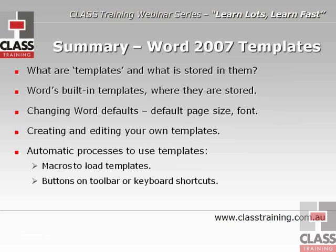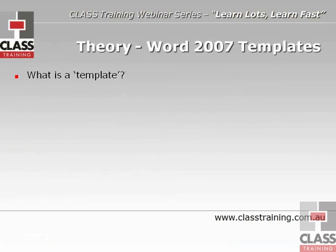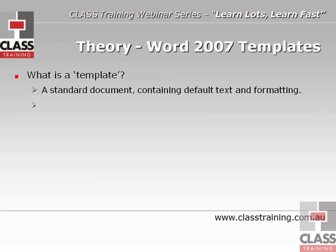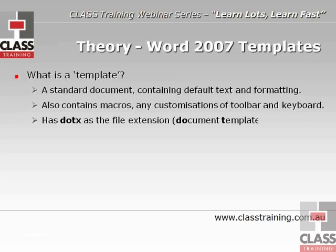We'll look at macros to load templates — setting up some macros, explaining what macros are, and how you can use them to quickly access your particular templates going to clients or customers. Once we've got the macros set up, we'll look at how to create buttons on the toolbar and also keyboard shortcuts to quickly pull up those particular templates. Now some theory on Word 2007 templates: a template is a standard document containing default text and formatting. It also contains macros — any macros you create are stored in the template as well, so if you copy the template file to another computer, you also copy the macros stored inside it.